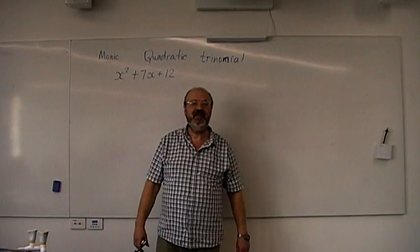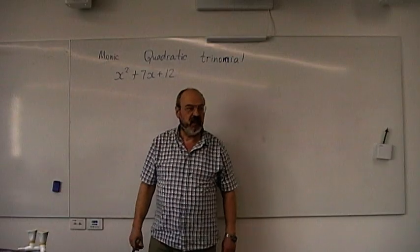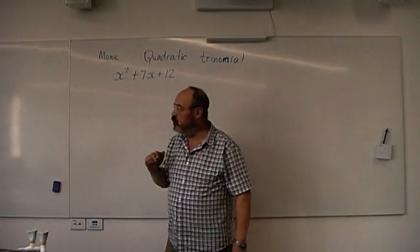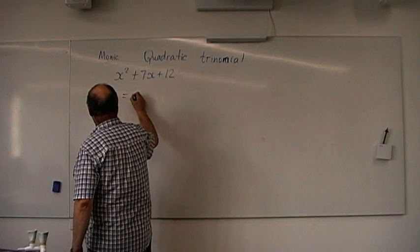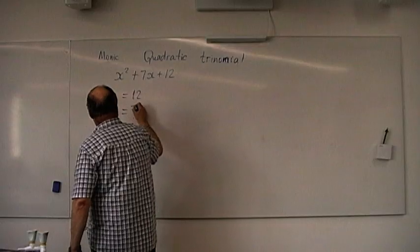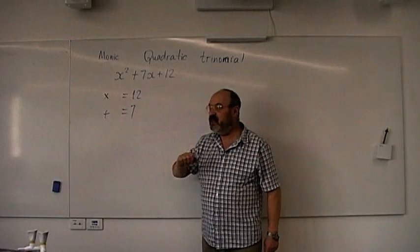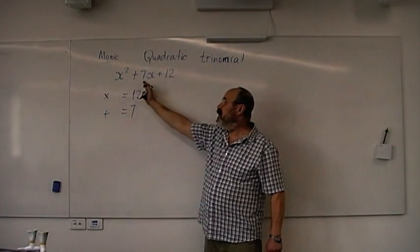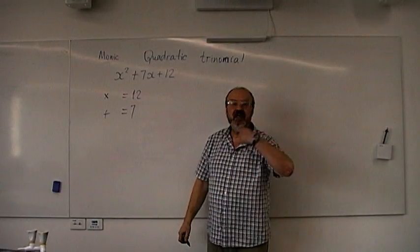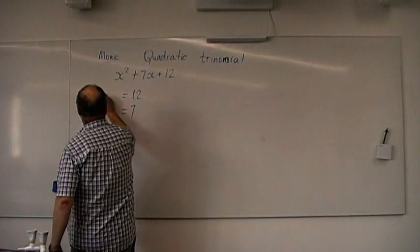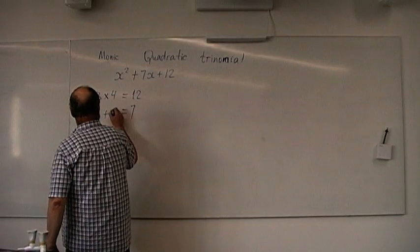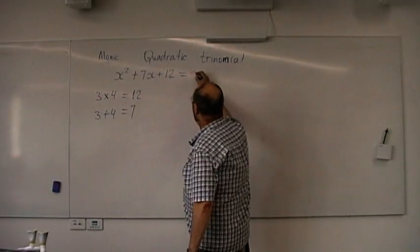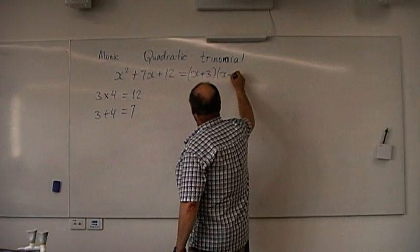We don't need to know the name, but the technique is this: we look at the two numbers 7 and 12, and we need to find two numbers which multiply to 12 and add up to 7. Those numbers are 3 and 4 — because 3 times 4 equals 12, and 3 plus 4 equals 7. That means x squared plus 7x plus 12 factorizes to x plus 3 times x plus 4.